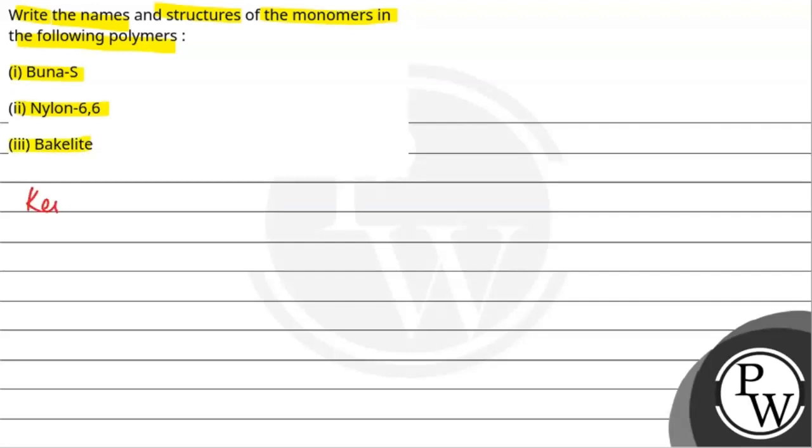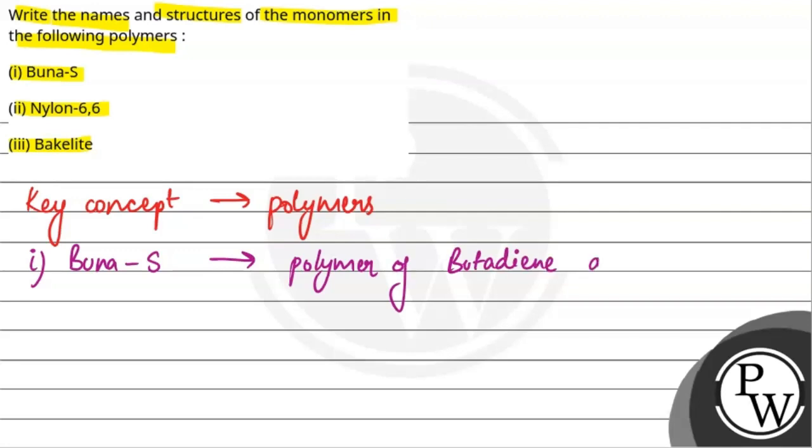So, the key concept of this question is polymers. We will talk about various polymers and their monomers. Starting with the first one, which is Buna-S. This is a polymer of the monomers butadiene and styrene.